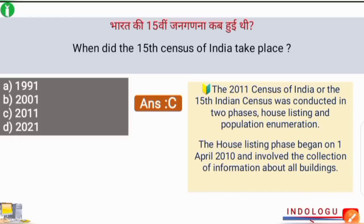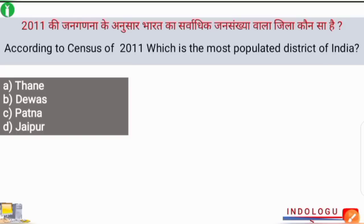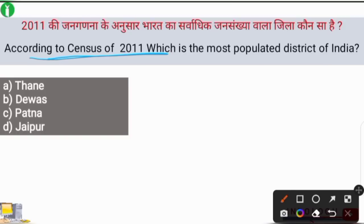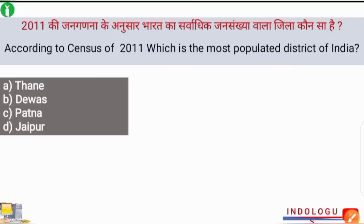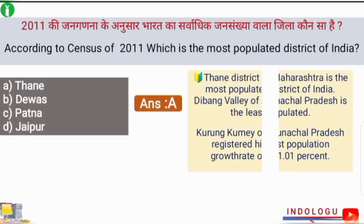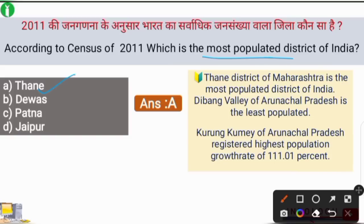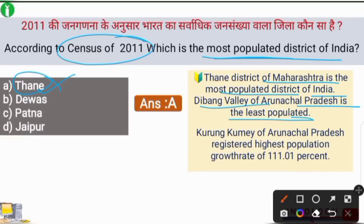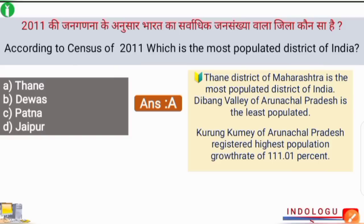Next question: according to the census of 2011, which is the most populated district of India? The correct answer is option A — Thane. Thane district of Maharashtra was the most populated district of India. Dibang Valley of Arunachal Pradesh was the least populated. Kurung Kumey of Arunachal Pradesh registered the highest population growth rate of 111.01%.